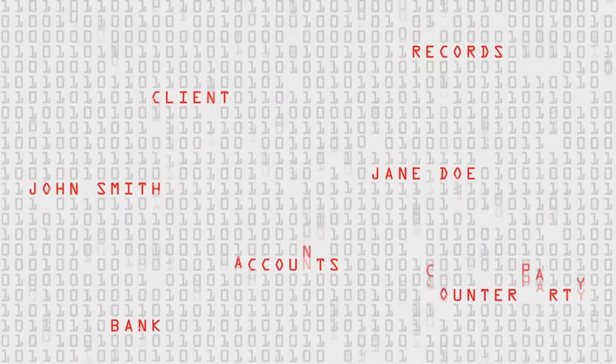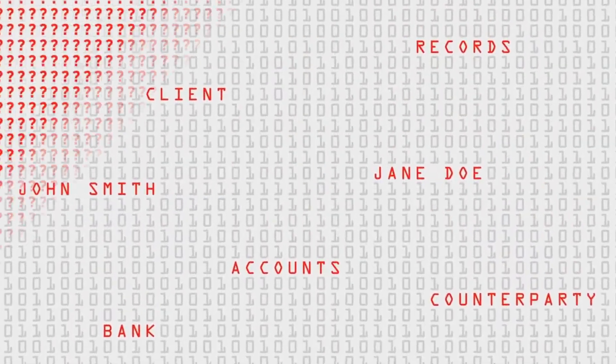There's also privacy to think about. Sure, you can encrypt the data, but usually the only people who should have a copy of a deal between Bob and Alice are Bob and Alice. Now, meet Corda — DLT with a difference.